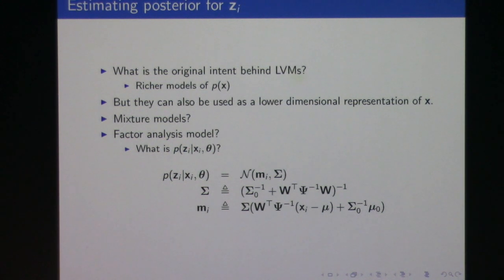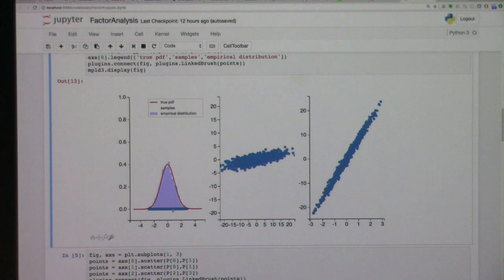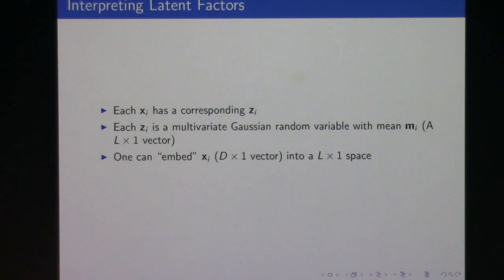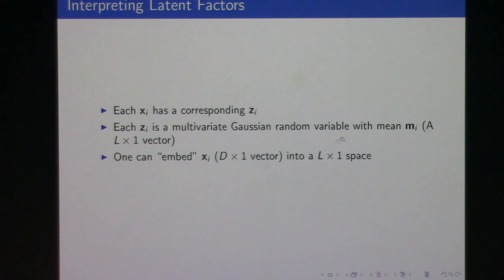So far I haven't told you how to estimate psi, W, mu, and so on — I'll quickly tell you that later. Right now I'm showing that if you have the factor analysis model, how do you get z_i from x_i. If I give you an x_i and ask what z_i would have generated this, you apply this formula and find that z_i is a Gaussian with some mean and covariance given by these expressions. That helps because it gives you a lower-dimensional representation of your data.